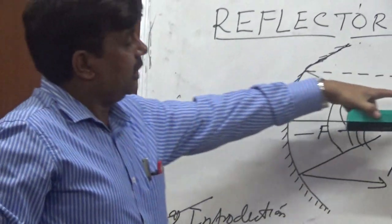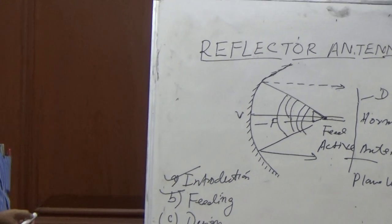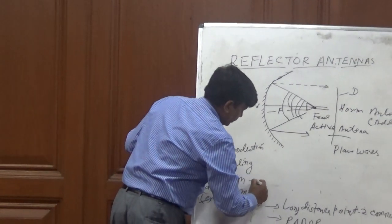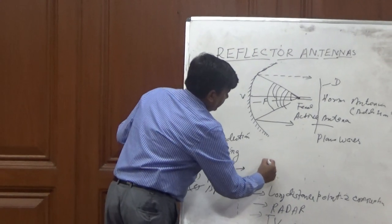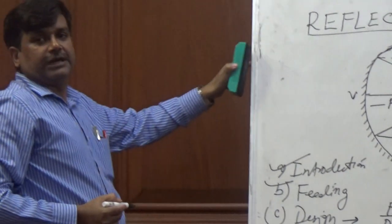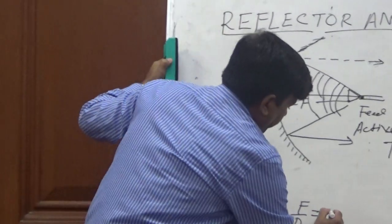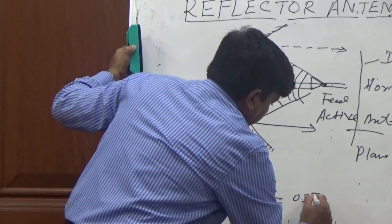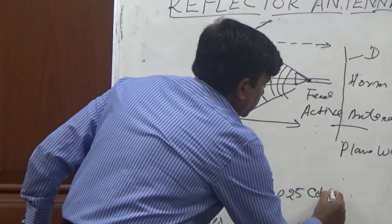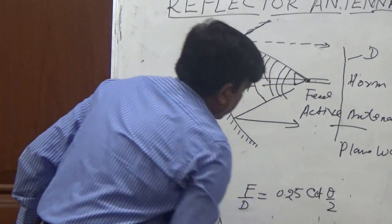That is, these two parameters are very important as the design function. So there is a relation between these two parameters. This says that the ratio of focal length to the aperture of the reflector should be related by this formula. So F by D equal to 0.25 cotangent theta by 2.